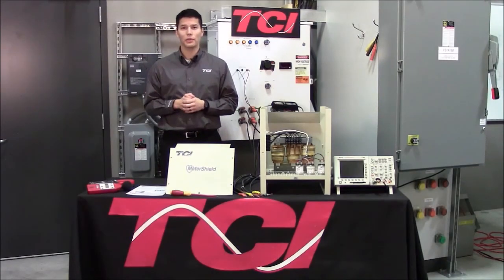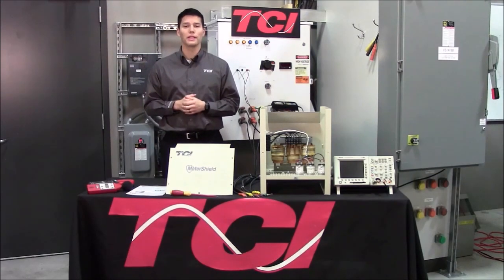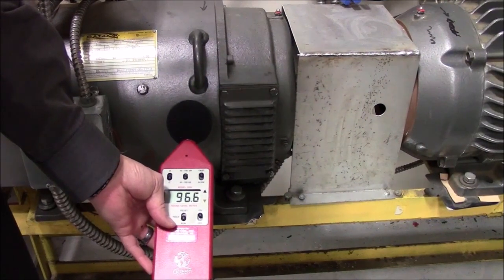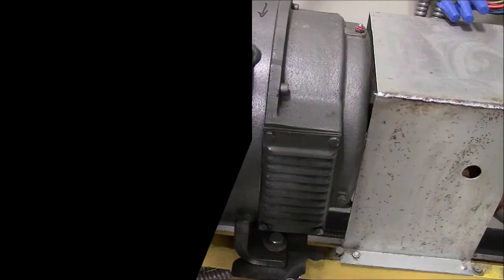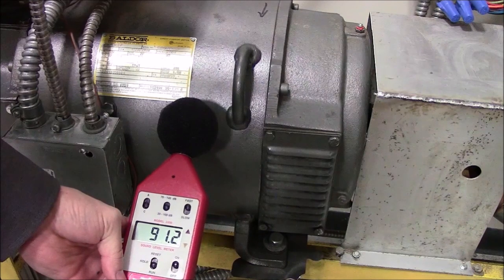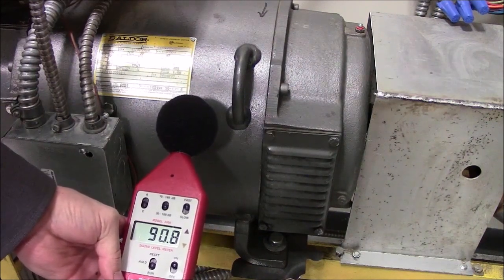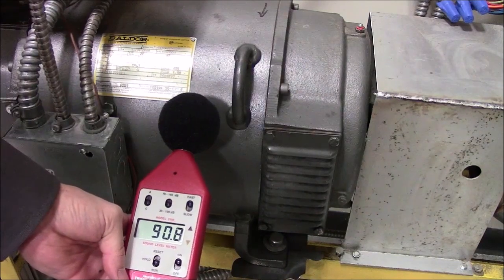Now we can take a look at how the motor shield benefits the reduction of motor noise. Without the motor shield the meter shows a reading of about 96 and a half decibels but if we look at the meter again with motor shield applied we can see about a five decibel reduction in motor noise. This comes in at about 91 decibels.